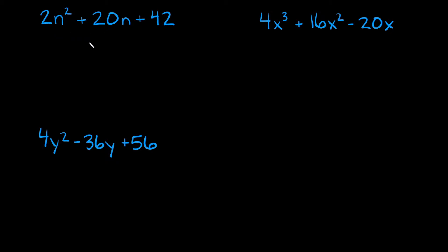So 2n squared plus 20n plus 42. Before doing anything, before factoring or anything, you always want to see if there's something that you can factor out from each of these three terms — in other words, your greatest common factor. In this case there is something we can factor out, which would be a 2. Each of these three terms are divisible by 2, so we can pull a 2 out.